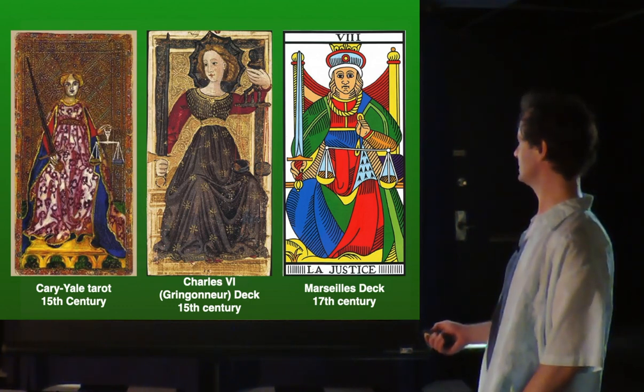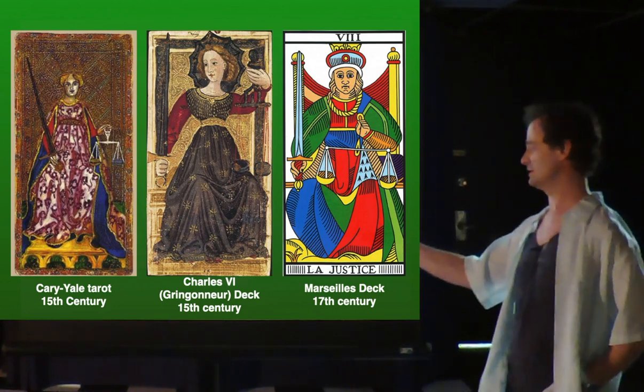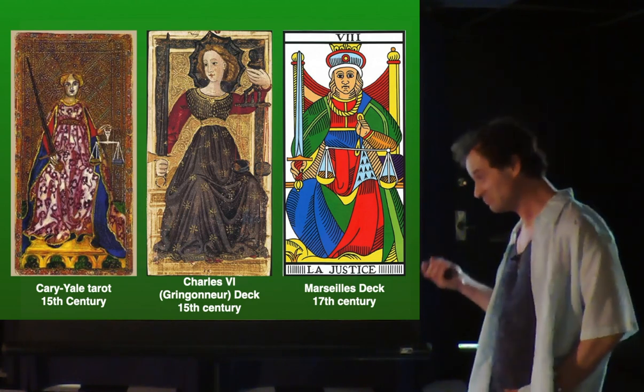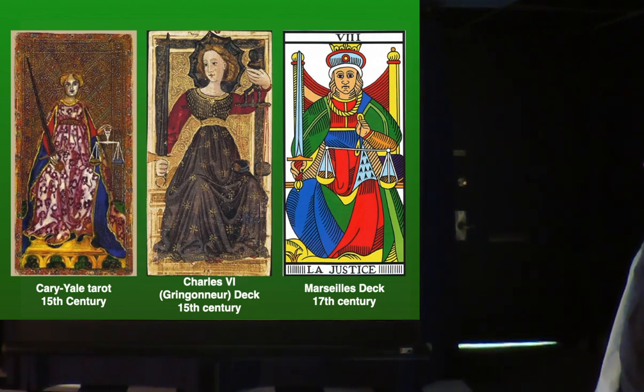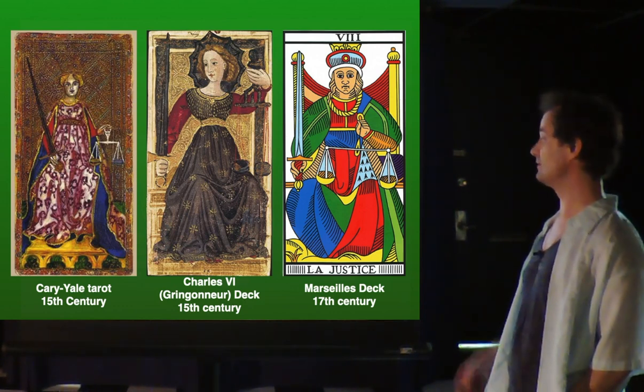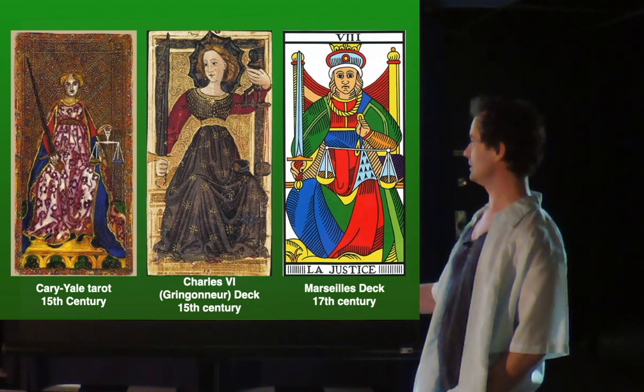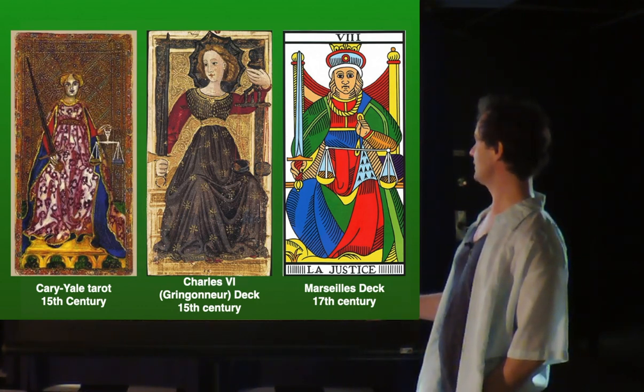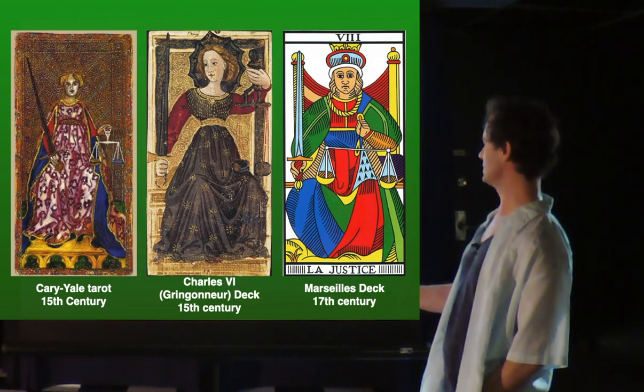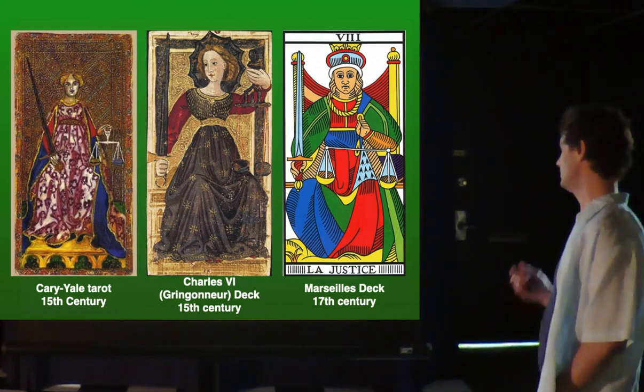These are some old cards from the 15th century. The Cary-Yale deck is one of the first decks ever recognized by historians, as well as the Charles VI deck. The lady is holding scales and a sword upright, which is unusual compared to later decks. This is the Marseille deck from the 17th century.